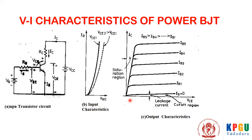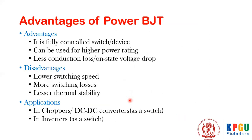The advantages of Power BJT: it is a fully controlled device — both switching on and off can be controlled. It can be used for higher power ratings and it has very low conduction loss or on-state voltage drop. The disadvantages are that it has lower switching speed, and because of that, more switching losses. It also has lesser thermal stability.